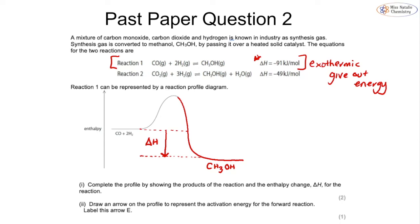Part two asks us to draw an arrow on the profile to represent the activation energy for the forward reaction — going from reactants to products. We draw a line from the reactants level up to the top of the curve and label this B for activation energy. Make sure you don't have an arrow pointing only downwards — a double-headed arrow is fine, but if unsure, just draw a vertical line.